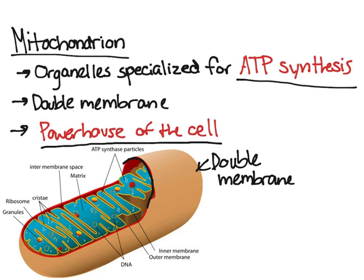As you can see in the diagram, all of this blue stuff in there is called the matrix. The matrix is the space between the cristae, which are these folds in the mitochondria.